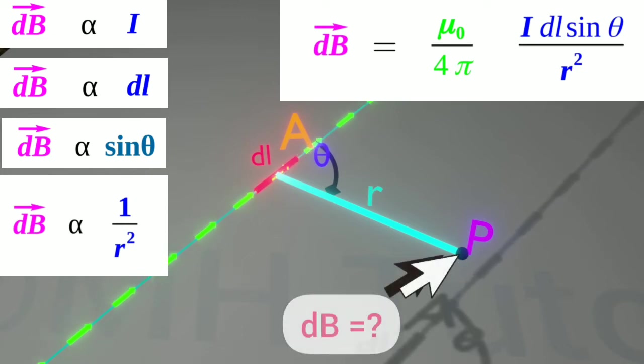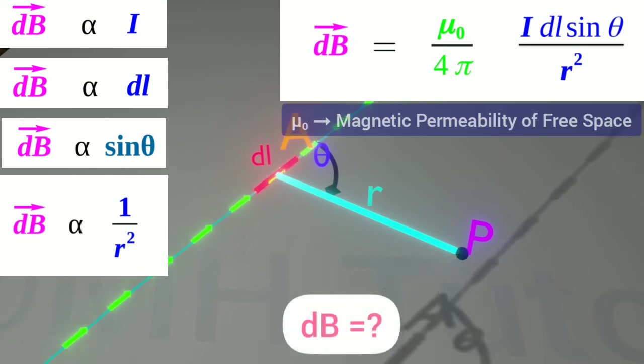Which is dB equals μ0 by 4π, into I DL sine theta by R square. μ0 is the magnetic permeability of free space.